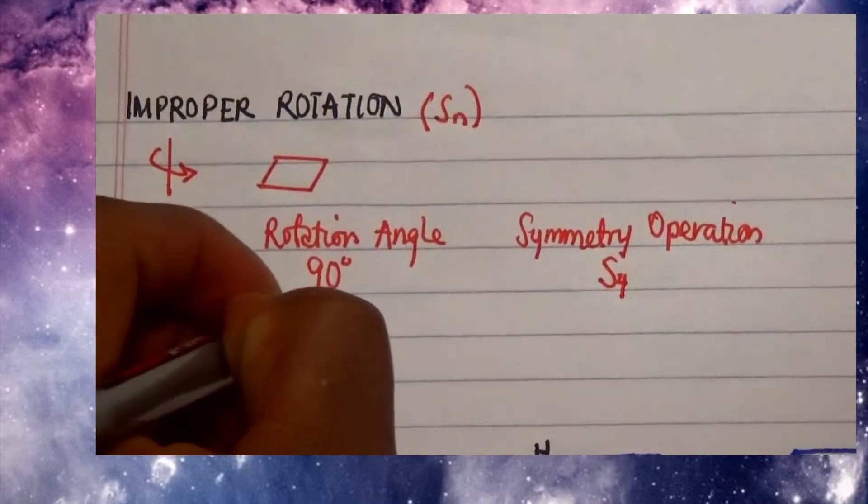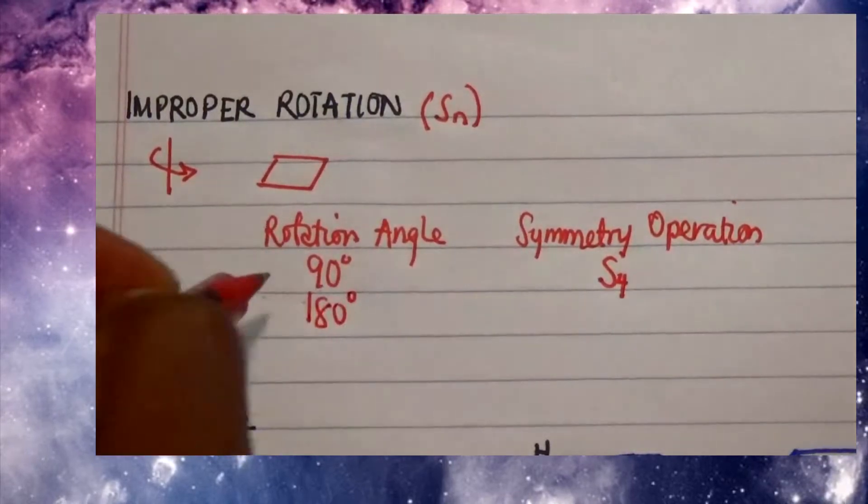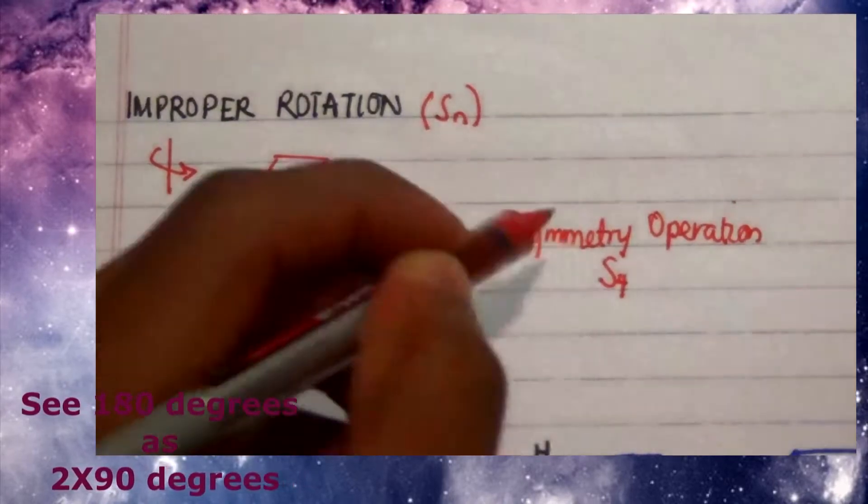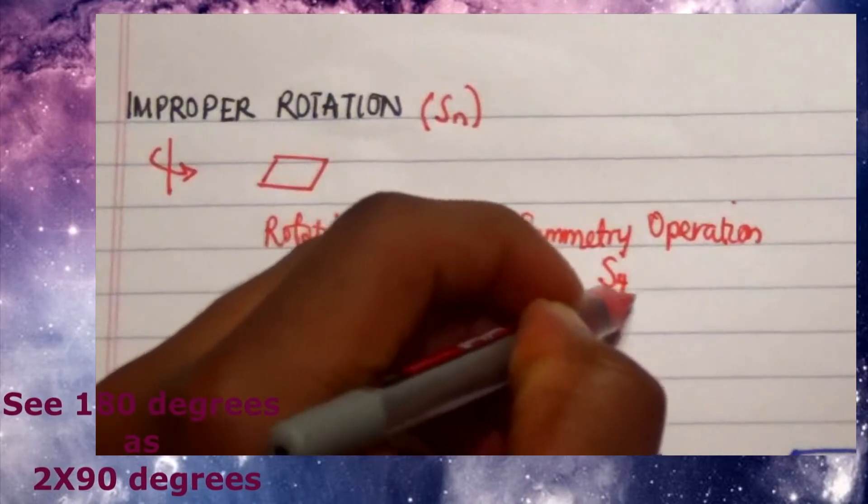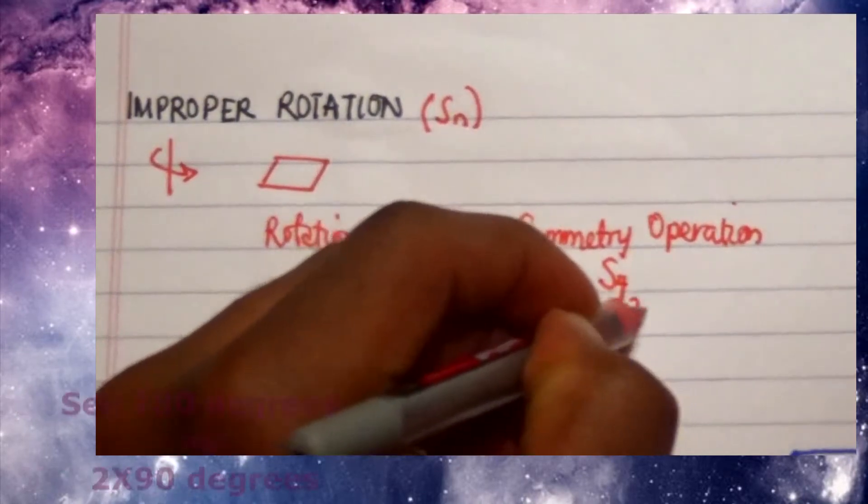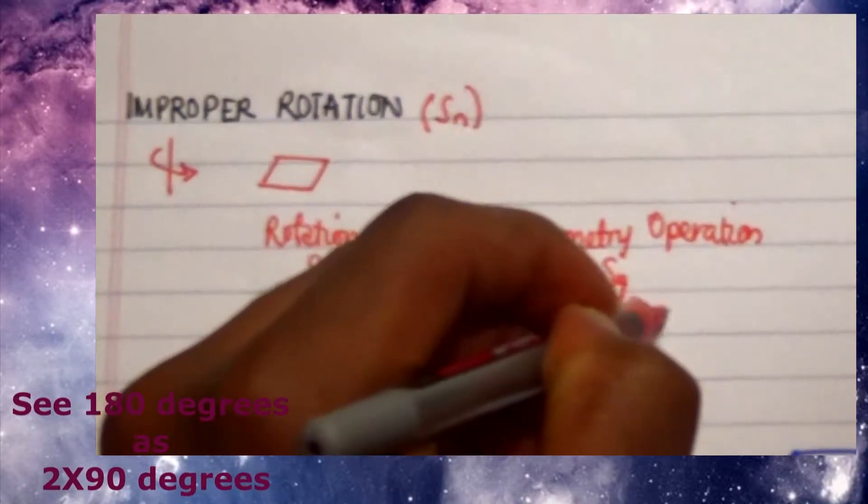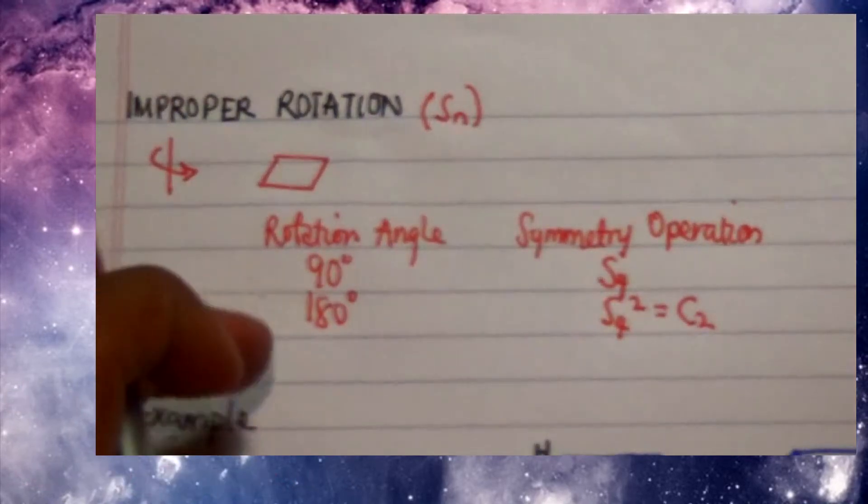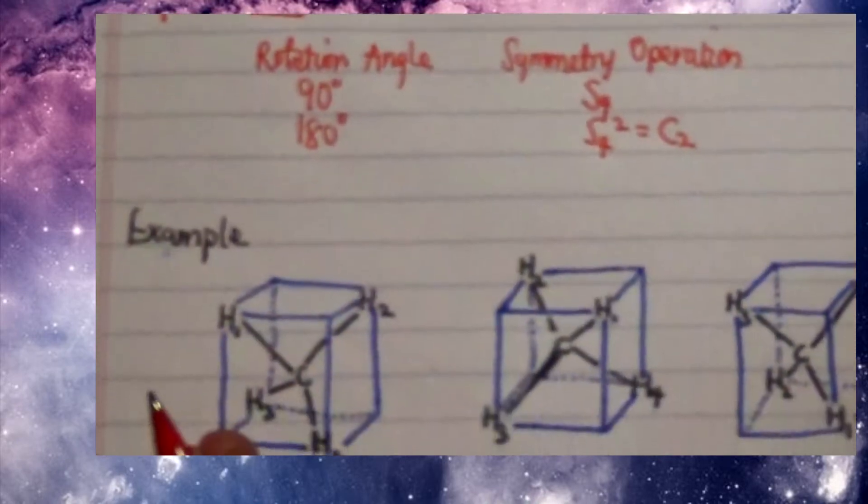Now next one here is 180 degree rotational angle, and what I get after I perform this is S4 squared, or this can be equal to C2. Now these two here we're going to look at specifically in this particular example.